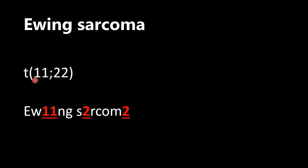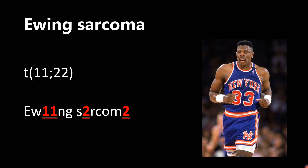Ewing sarcoma is a translocation between chromosomes 11 and 22. The letter method: the 'I' in Ewing is doubled to make two 1s, and the A's in sarcoma are the 2s — so Ewing is 11, sarcoma is 22. But I actually prefer the Patrick Ewing method: his jersey number is 33, and 11 plus 22 equals 33. So chromosomes 11 and 22 give you Patrick Ewing — Ewing sarcoma.